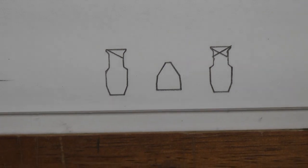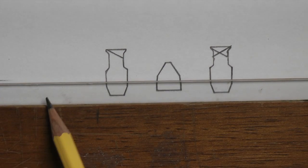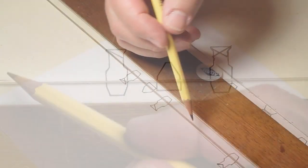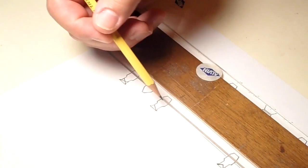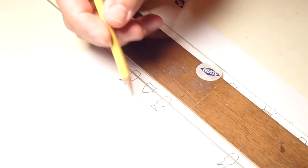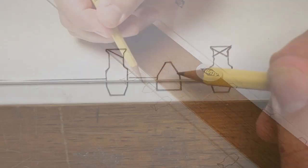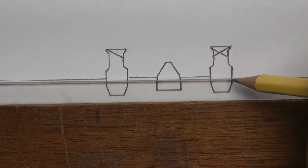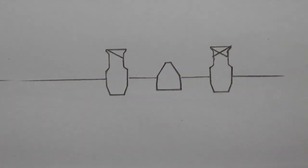After we're done with that, we bring our parallel rule up to where the pipe is and add the pipe. Just like so.